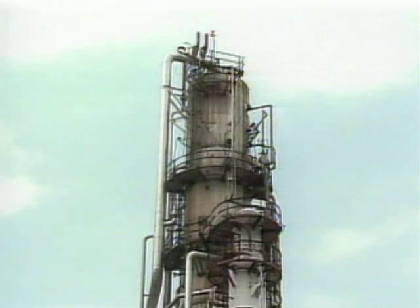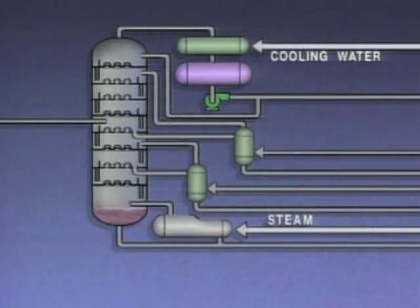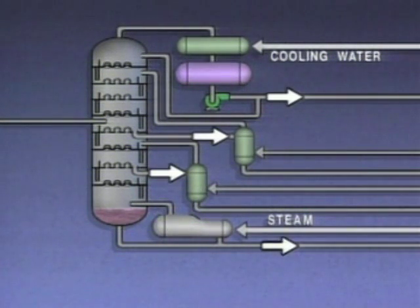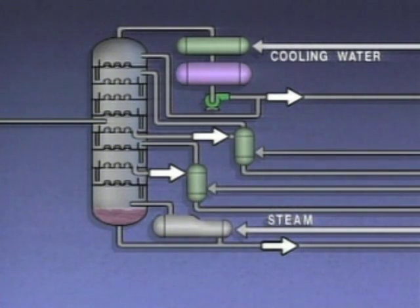An atmospheric tower is so named because distillation takes place in it at or near atmospheric pressure. Now, let's focus on the operation of a typical multi-draw or side-draw tower. The multi-draw tower illustrated here is used to separate a mixture into four products. Each product may be made up of one or more substances. The tower has four draw-off lines located at different levels, which provide a means for removing the products of the distillation.